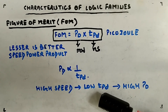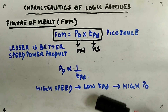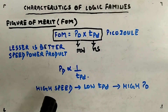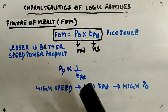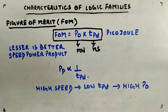There is a trade-off: power dissipation and propagation delay are inversely proportional. Low propagation delay (high speed) leads to high power dissipation. If you want a low power circuit, it will be slower. You must balance these based on application requirements, always keeping in mind that a lower FOM is better. Remaining characteristics include current/voltage parameters, noise margin, and operating temperature range.